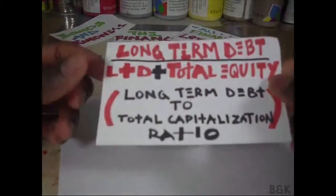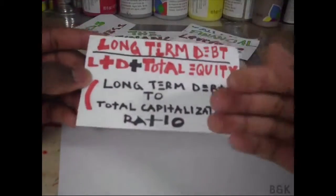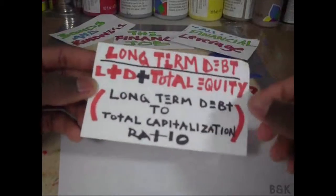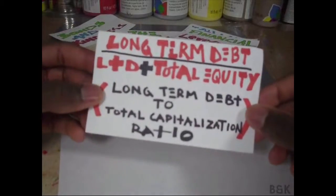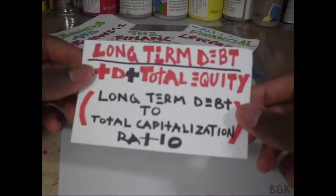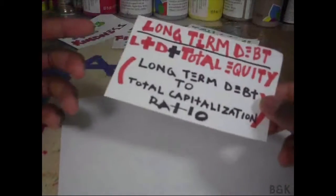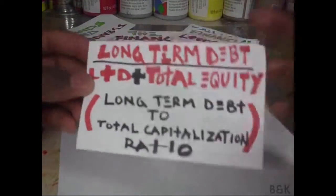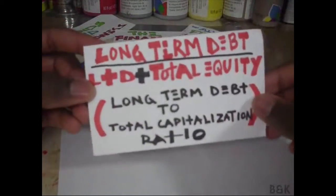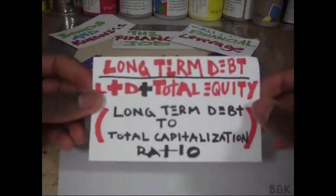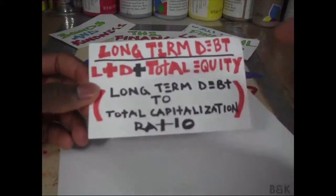So far it's been very easy for me to explain ratios and how to remember them, because everything is in the language used to describe the ratio. With the debt-to-asset ratio, we're looking at everything we have and how much we owe — the story is in the description.